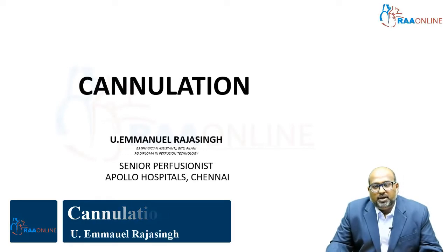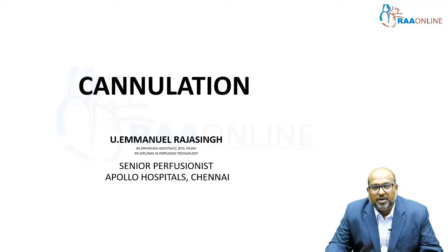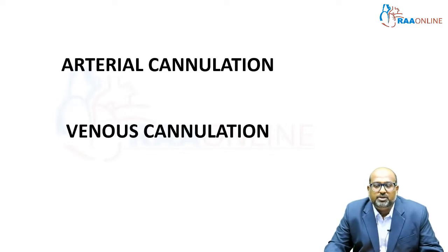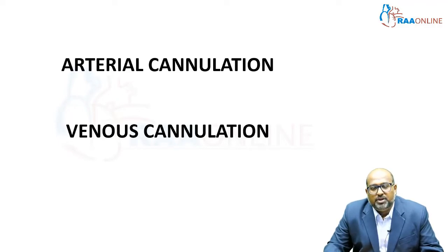Good day to one and all. Today the topic of discussion is cannulation in cardiopulmonary bypass. I am Immanuel Rajasinghe and I am going to talk about the different types of cannulation and different types of cannulas used during regular cardiopulmonary bypass. Cannulation is of two types: arterial cannulation and venous cannulation. We will also discuss the different cardioplegia cannulas used and cardioplegic cannulation.